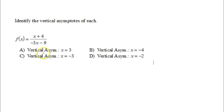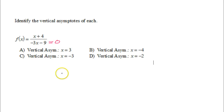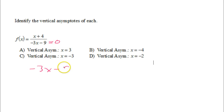Let's identify the vertical asymptote of this function. You can get the vertical asymptote by setting the denominator equal to 0. If I set negative 3x minus 9 equal to 0,